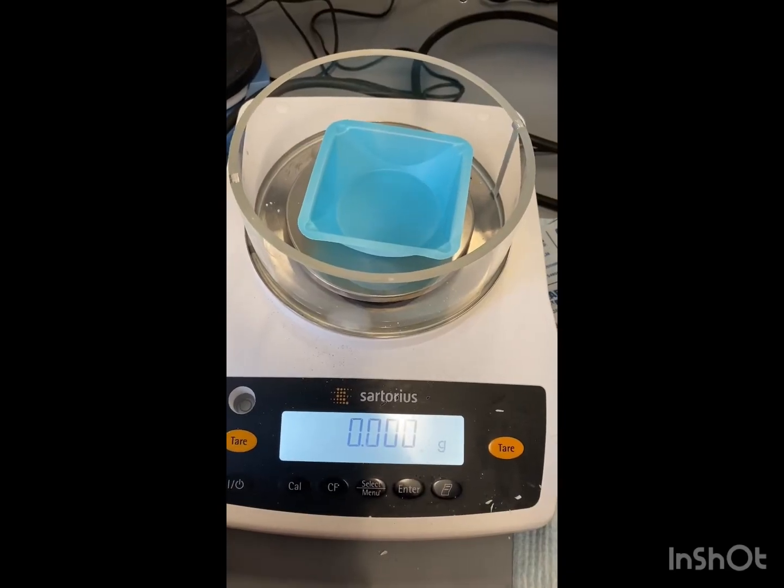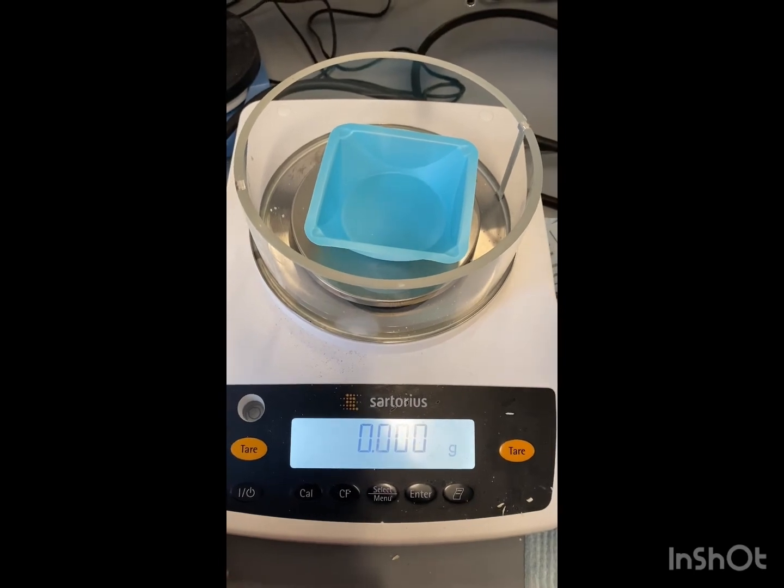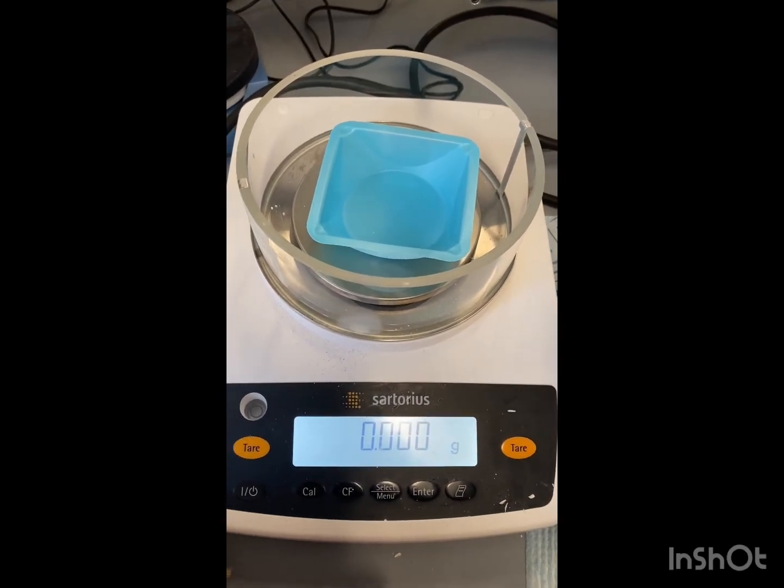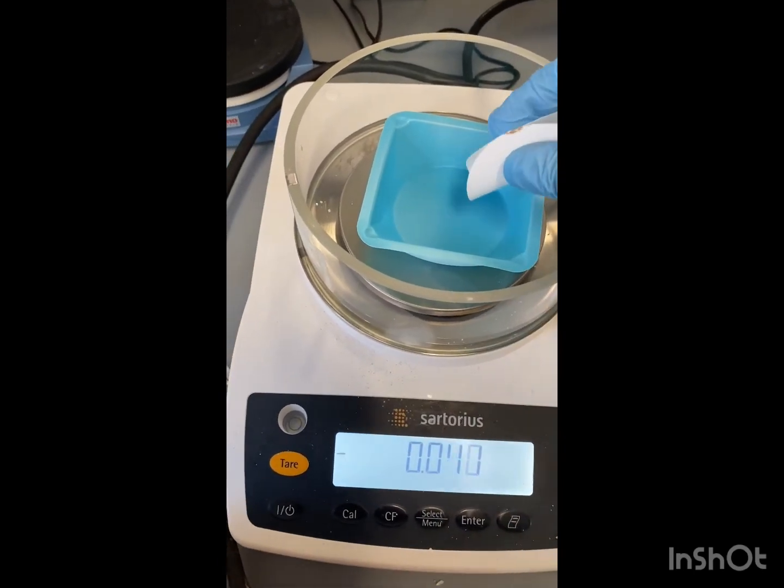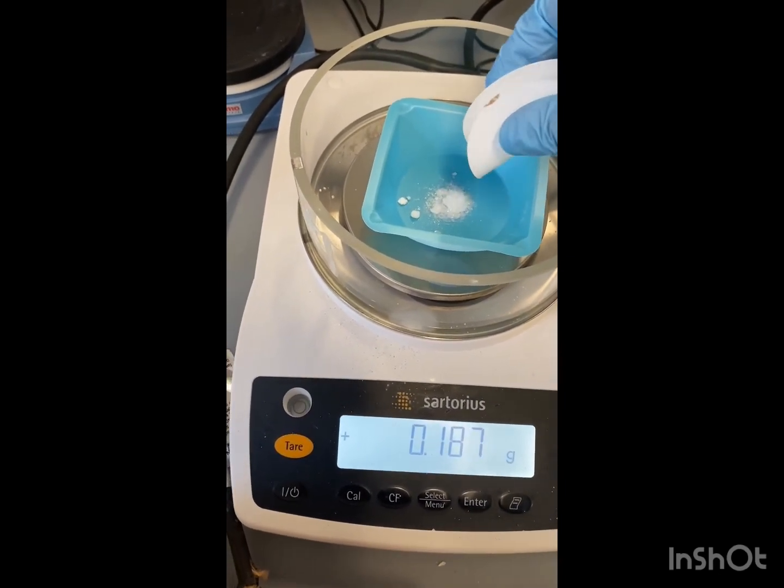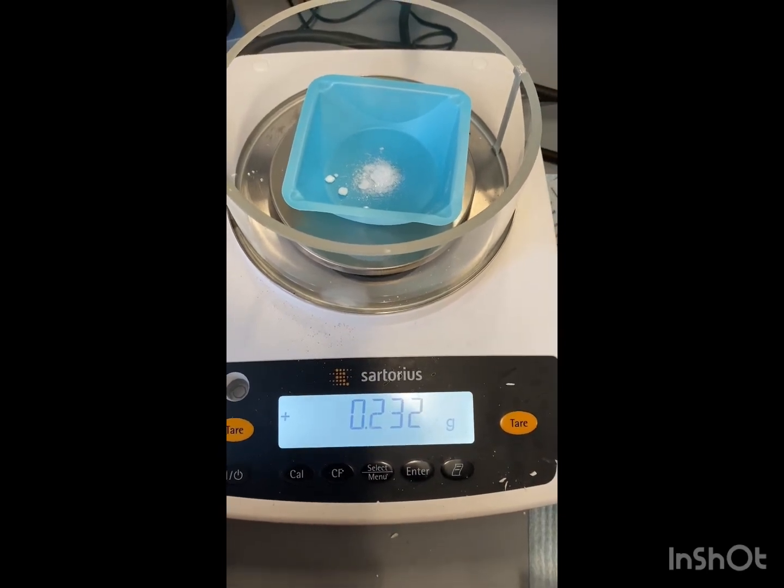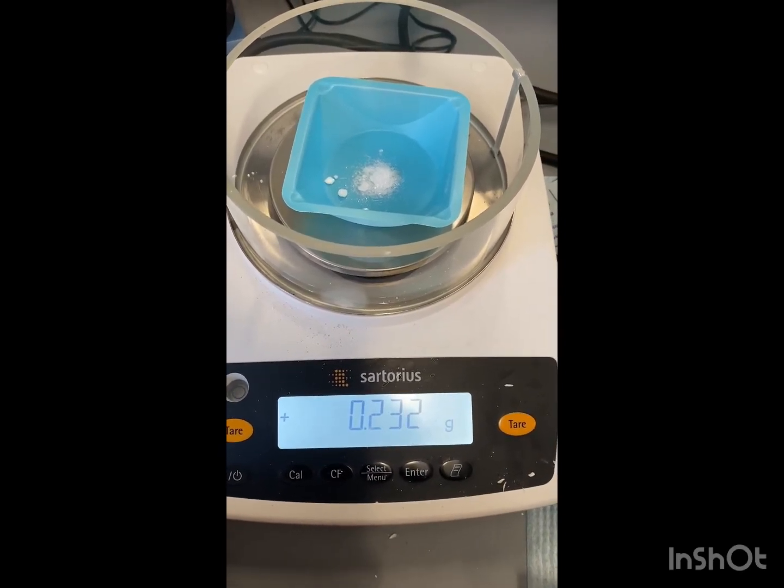So we've let our benzoic acid dry. I have a weigh boat that's already been tared. Now we're just going to get a final mass on our benzoic acid. So we have a mass of 0.232 grams.